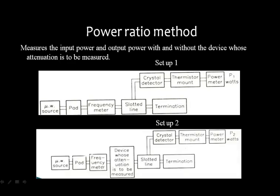In setup two, the complete setup is the same — the only change is that you have now connected the device whose attenuation is to be measured. Setup one is without that device, and setup two is with it. You then check the power P2 when the device is connected. For example, if in setup one you get 10 watts and in setup two you get 8 watts, then 2 watts of power loss represents the attenuation provided by the device.